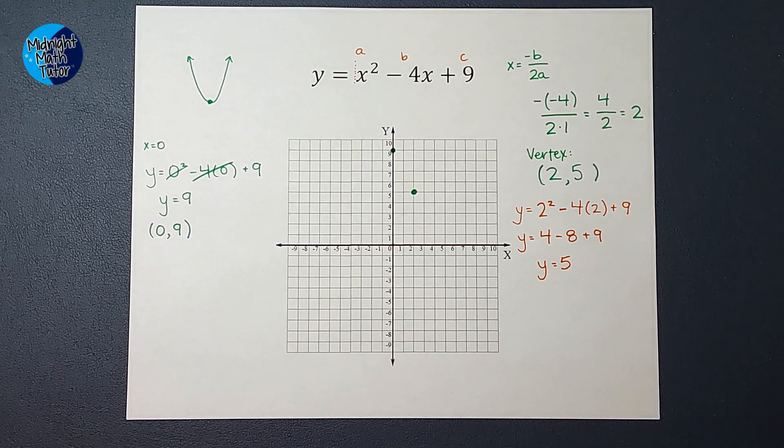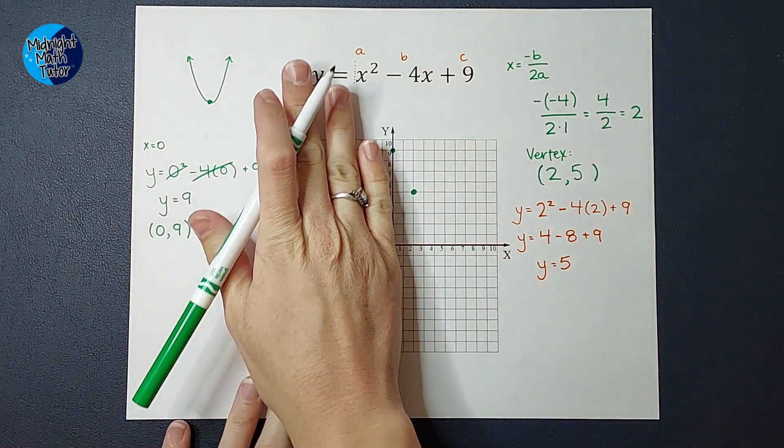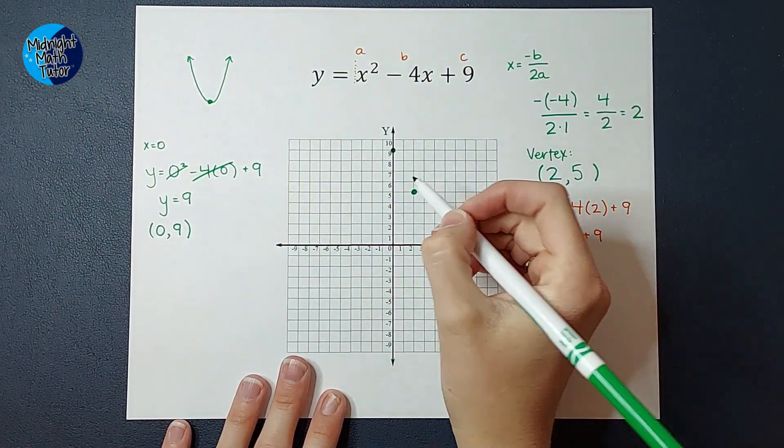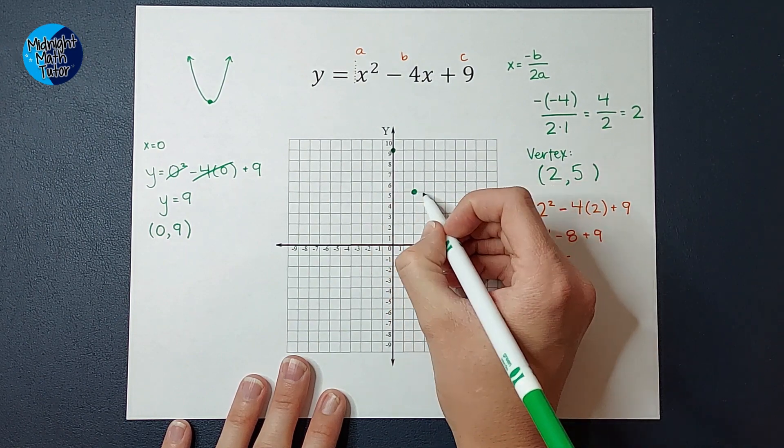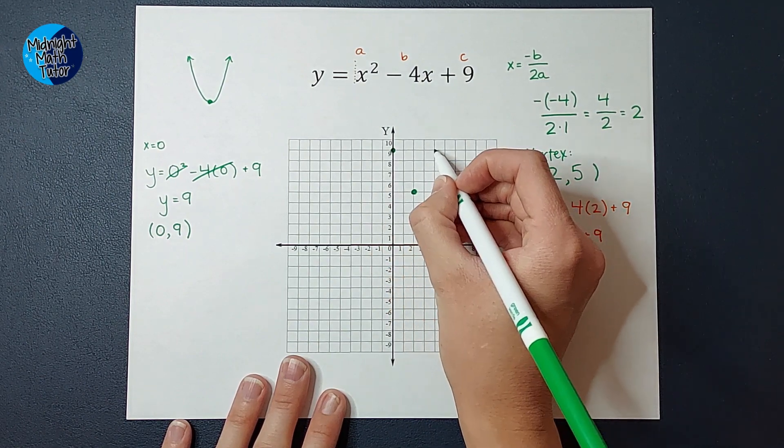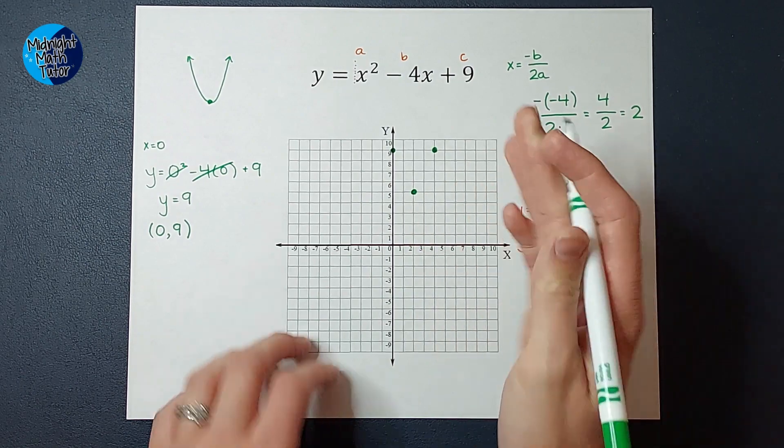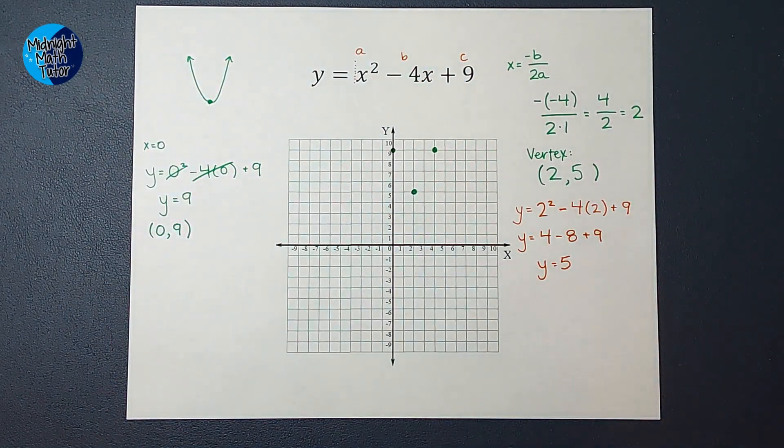So now I can think of it as the same thing on the other side because it's reflected over. So see how this is like over 2, up 1, 2, 3, 4, over 2, up 1, 2, 3, 4. It's just the same on both sides.